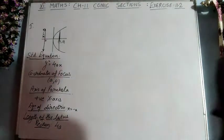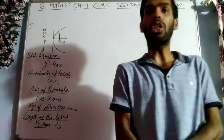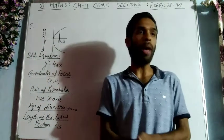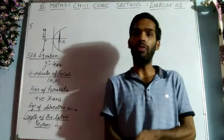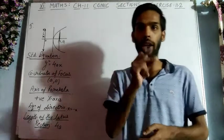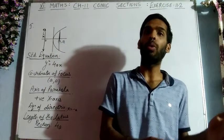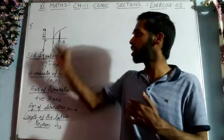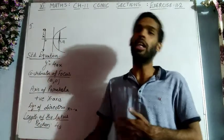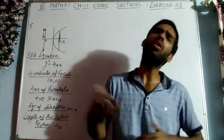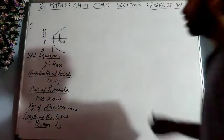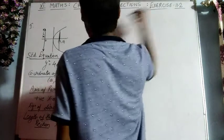Now let us start exercise 11.2. The exercise says: in each of the following questions 1 to 6, find the coordinates of the focus, axis of the parabola, equation of the directrix, and the length of the latus rectum. In the first 6 questions you have to find these four things. The equation type is not told directly — let's see how to identify it.